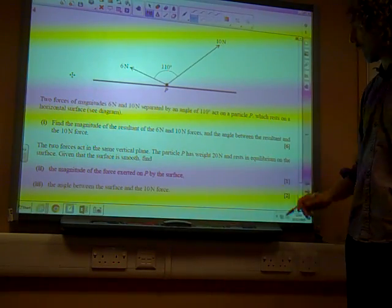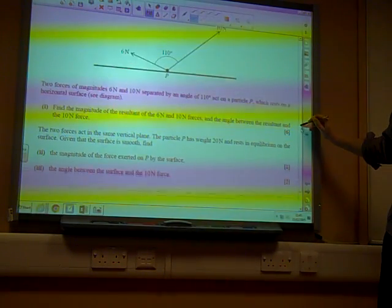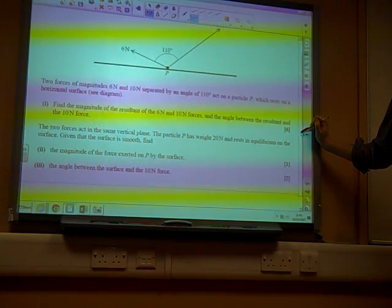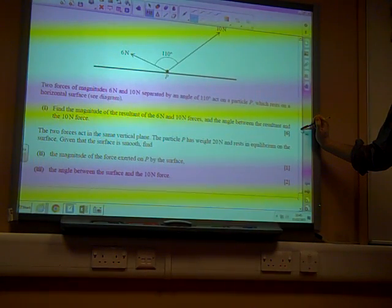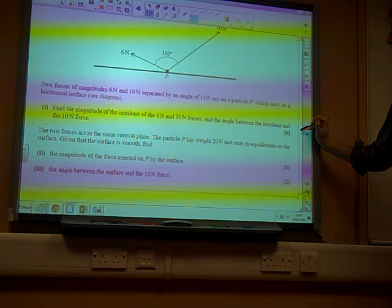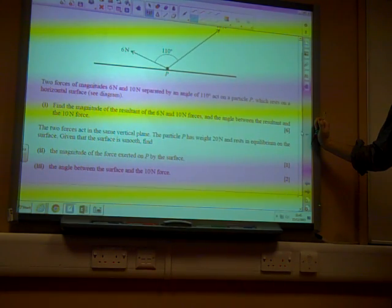So, question 4, the one that we as a class did by far the worst on. Two forces of magnitude 6 and 10, separated by an angle of 110 degrees, act on P, which rests on a horizontal surface.